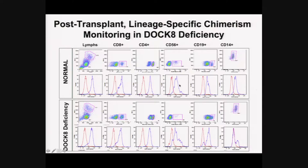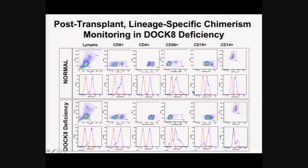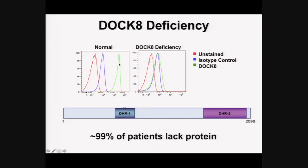DOCK8 flow testing can also follow patients after bone marrow transplant. A DOCK8 patient who had no DOCK8 protein expression pre-transplant — showing full donor chimerism in bulk lymphocytes, CD8, CD4 T cells, NK cells, and B cells post-transplant — but only about 20% donor chimerism in the myeloid compartment, exactly matching VNTR analysis. This flow test is rapid and can substitute for expensive VNTR chimerism analysis in a lineage-specific way.